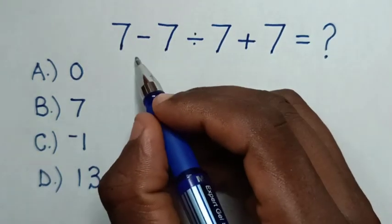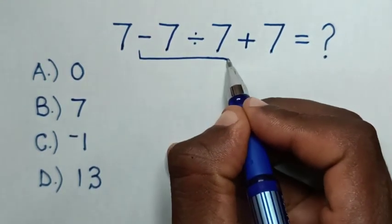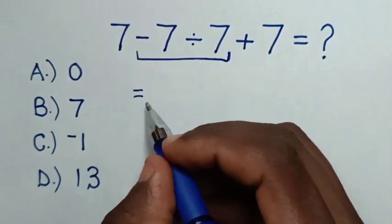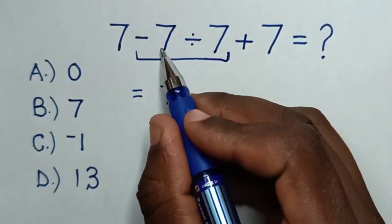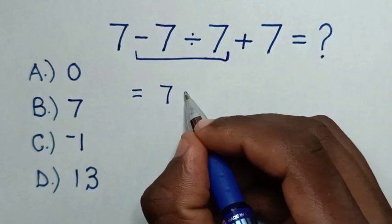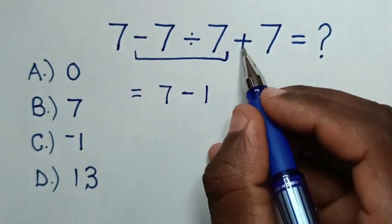So first we deal with this division. Then it will be equal to 7. Negative 7 divided by 7 is negative 1, then plus 7.